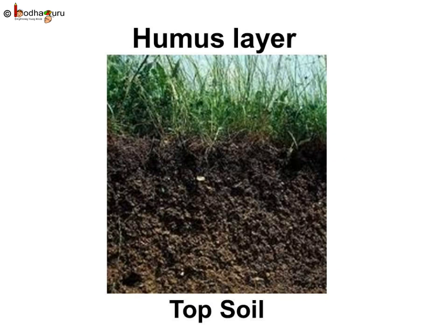This decaying organic matter present in the topsoil is called humus. Humus is dark, soft, and rich in nutrients. The humus layer, which is the topmost layer of the soil, is formed over millions of years and is very useful. As you can see, all plants grow well in this layer of the soil.